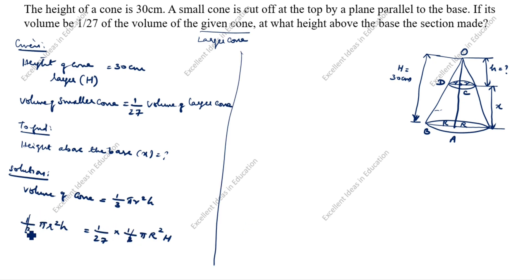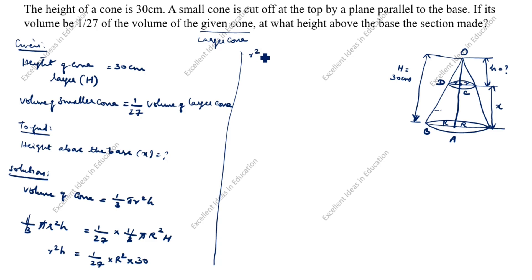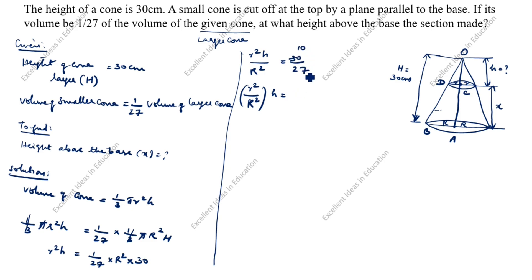We cancel 1/3, π, and π on both sides. What remains is: r² × h = 1/27 × R² × big H. Substituting big H = 30, we get r² × h divided by R² = 30/27, which simplifies to 10/9. So (r/R)² × h = 10/9.